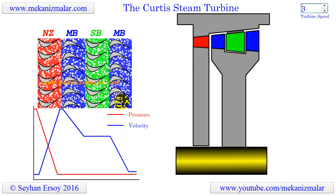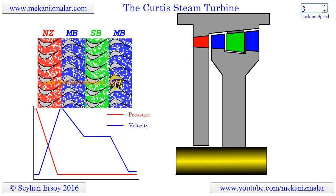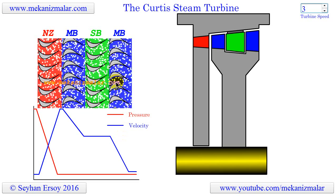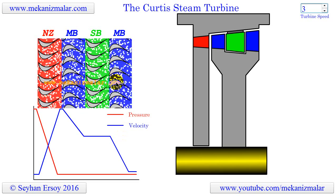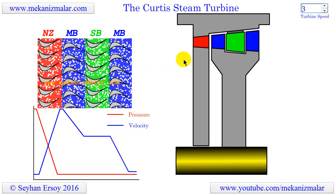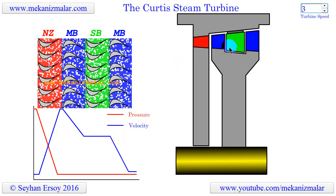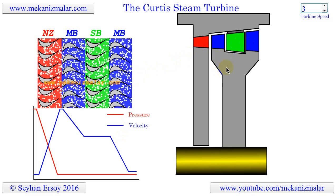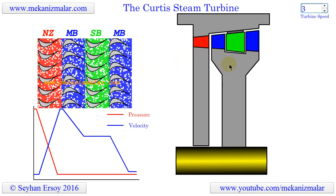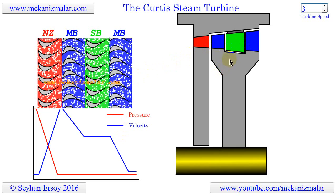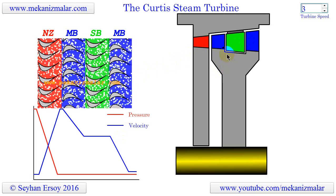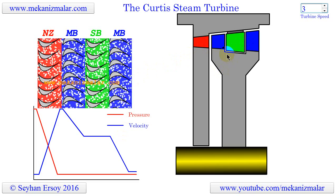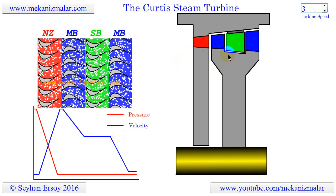The final stage is another moving blade section connected to the same disc as the first moving stage blades. In this example there are two moving blade stages, but there could be two, three, or four.